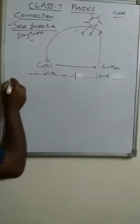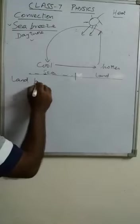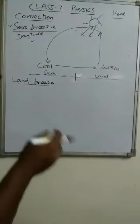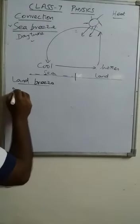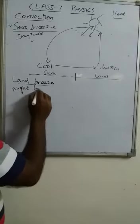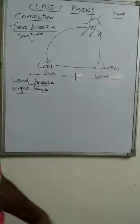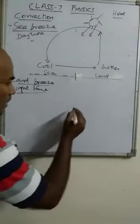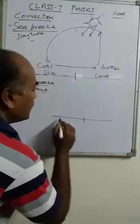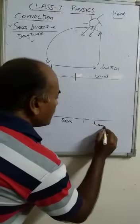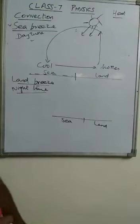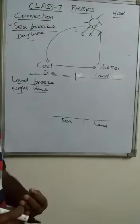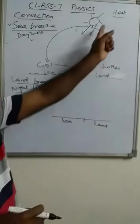Coming to the land breeze — land breeze also occurs on the same principle of convection, but it occurs during nighttime. During nighttime, cool air also blows on the seashore. Let us see how it takes place. Once again this is the sea and the land. During nighttime, no heat from the sun reaches the surface, but the reverse process takes place.